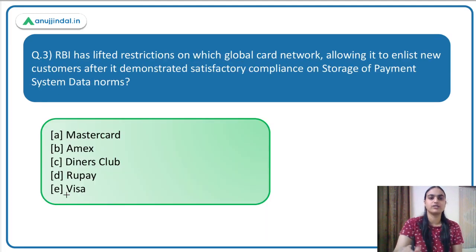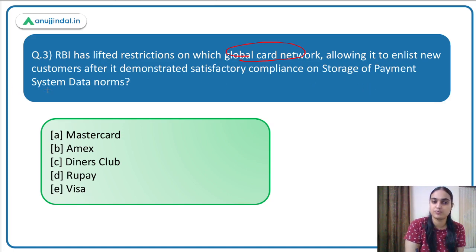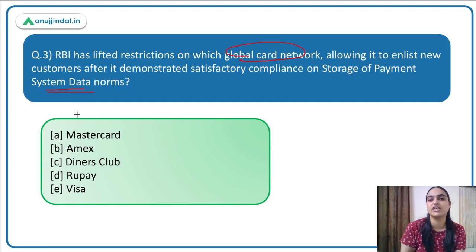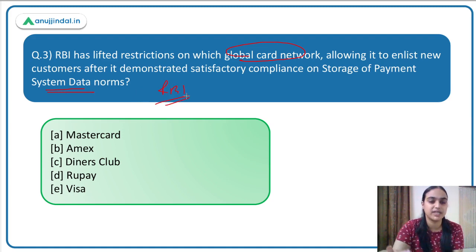Moving to the third question: RBI has lifted restrictions on which global card network, allowing it to enlist new customers after it demonstrated satisfactory compliance on storage of payment system data norms? We have discussed that different global card networks were restricted by RBI from enlisting new customers because they were not adhering to the storage of payment system data norms. RBI adopted norms requiring payment system data to be stored in India.